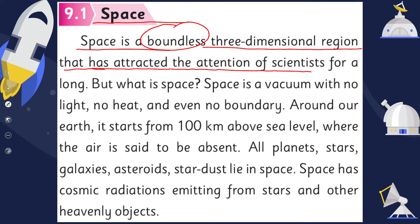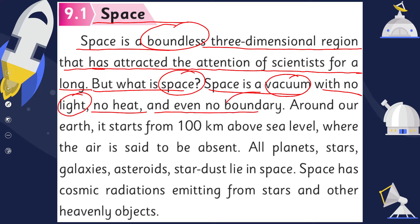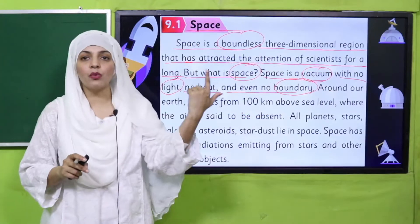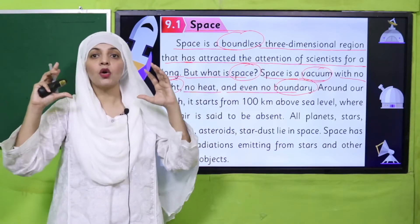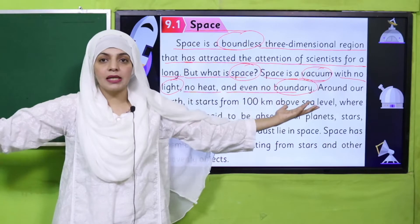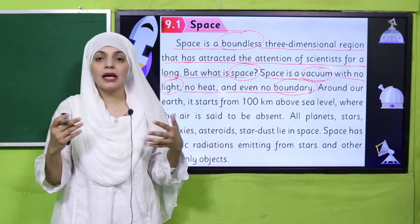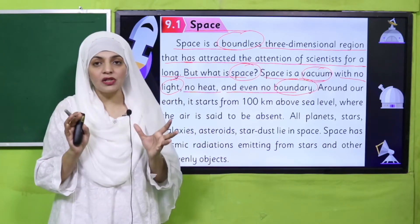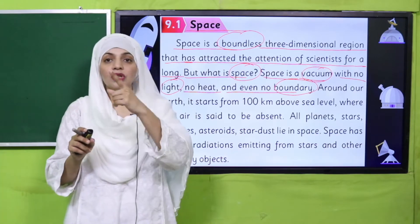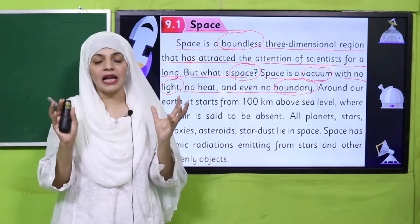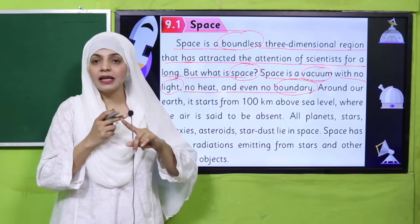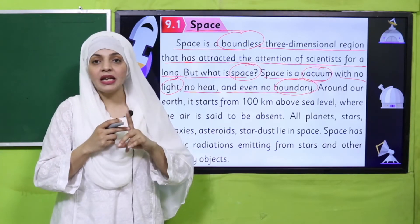What is space? Space is a vacuum with no light, no heat, and even no boundary. Space is boundless — it has no boundary, no wall, no limit. It is three-dimensional, meaning you can view it from any direction. Space has no light, no heat, and no gravity — it is a vacuum.